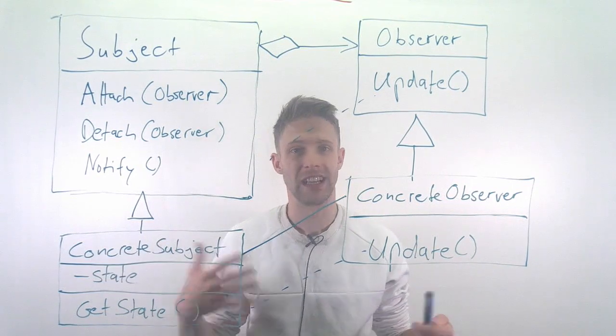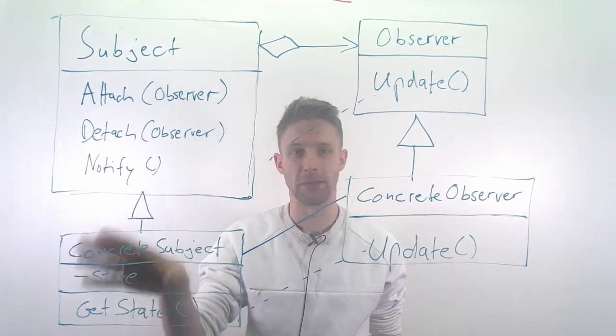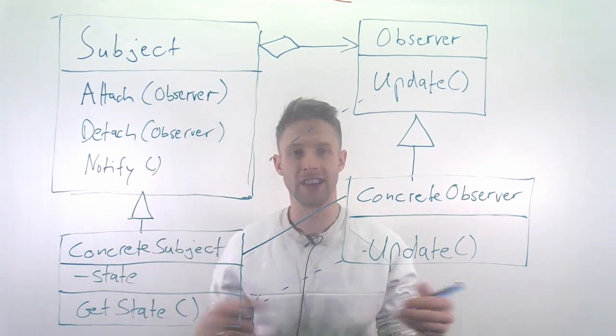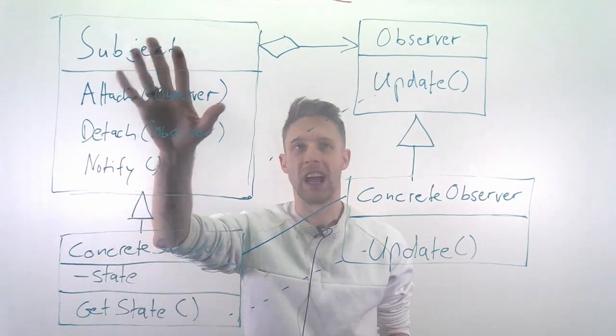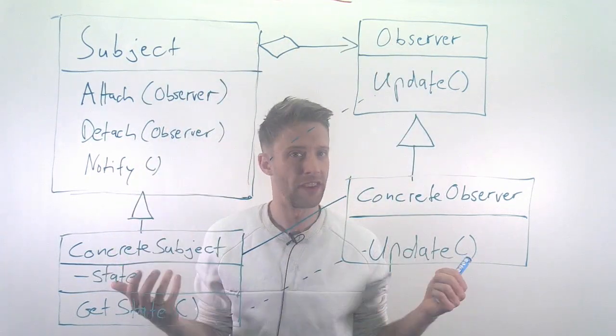Imagine now this is for example election data. Our concrete class is some kind of implementation of this data structure - states, parties, votes - and we have an observer that displays this as a bar chart as you often have.